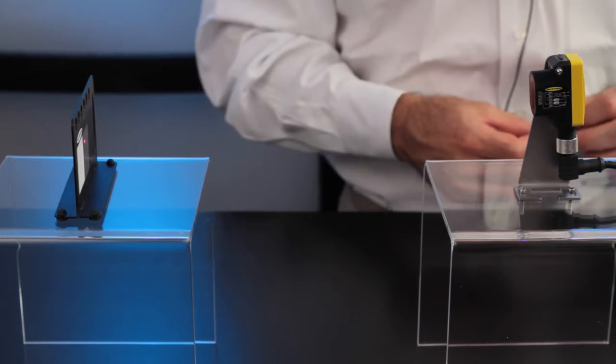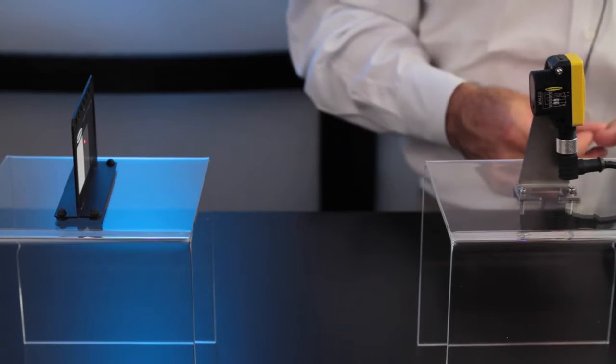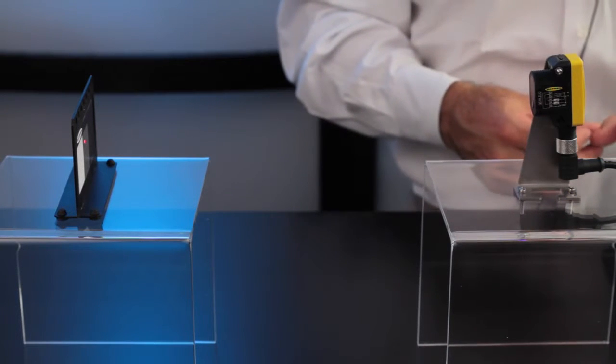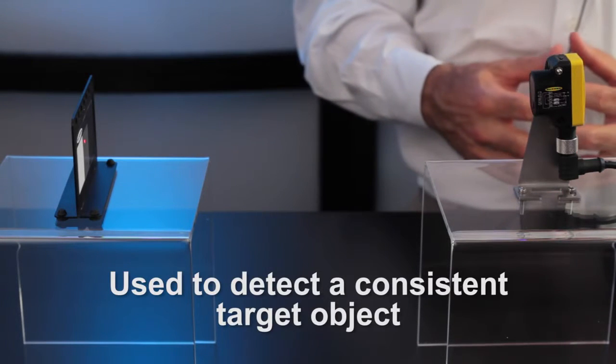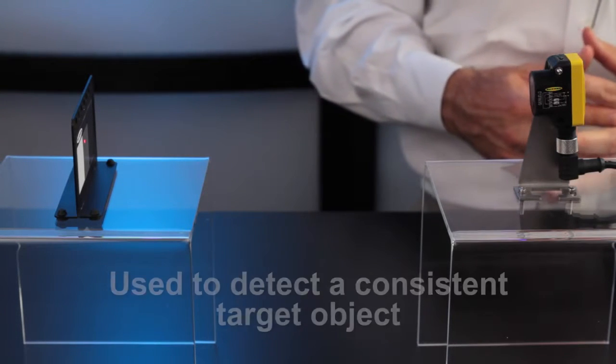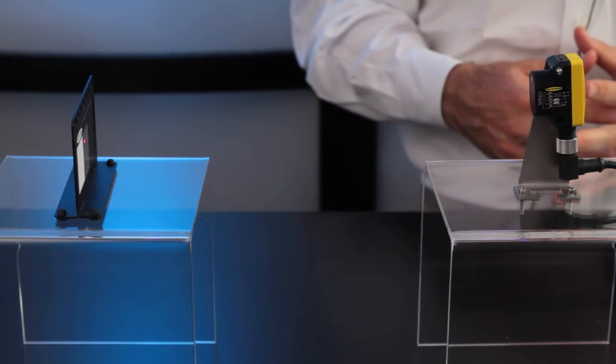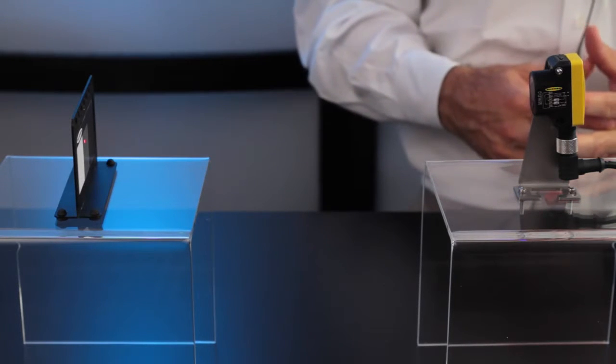In this video we show how to set up the QS30 laser diffuse in a two-point static teach. It's the most commonly used teach method, and it's used to detect a consistent target object, that is when two conditions can be easily presented.